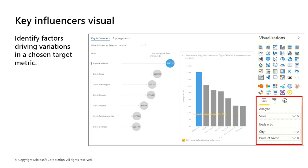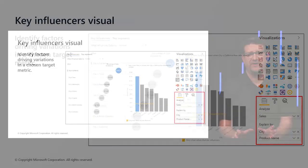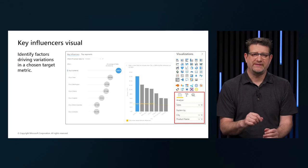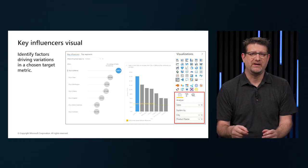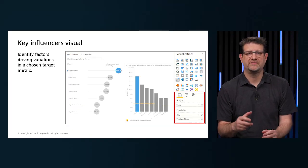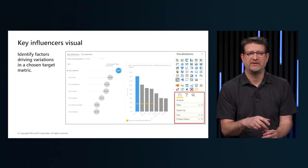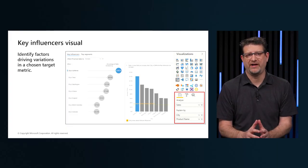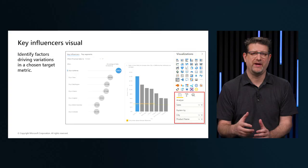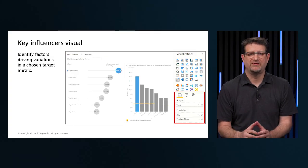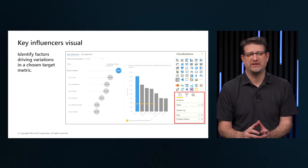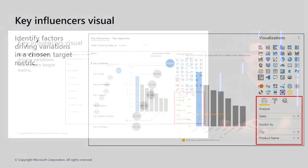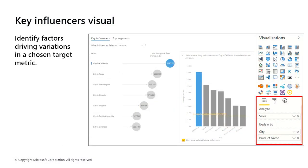The key influencers visual understands the factors affecting a specific metric. It analyzes data, ranks the factors that matter, and then displays those factors as key influencers. The visual also helps contrast the relative importance of those factors, so we can build visuals while understanding what factors impact them and why they appear the way they do. In this example, we have several visuals for the customer service team and want to understand the factors that most influence the metrics — specifically to figure out what factors affect sales. One factor might be the client type and another might be the location.